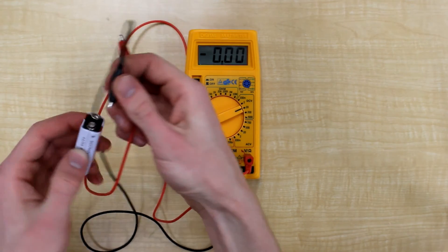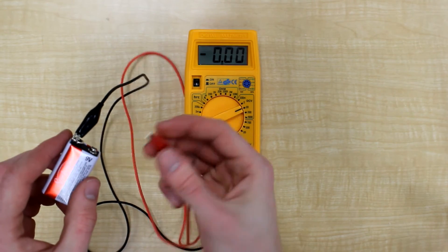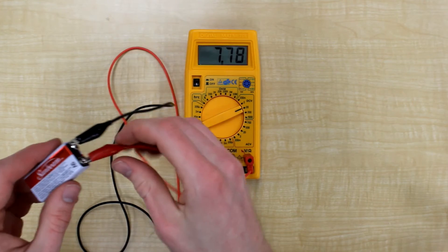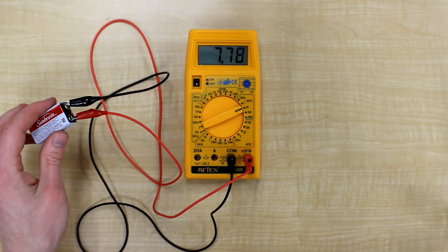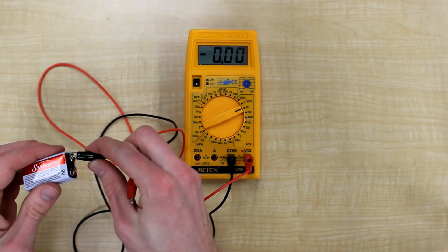Measure the negative lead to the negative end, which is here, and the positive to the positive end, which is here. Doing this, we can see that we have 7.78 volts. Now this is a 9 volt battery, but this is no fault of the multimeter.